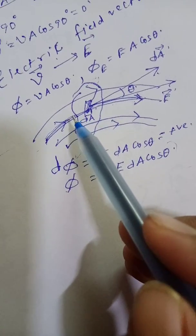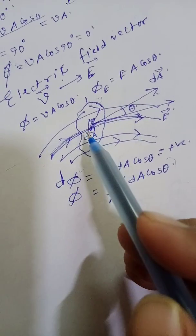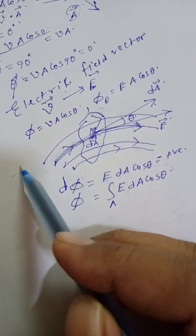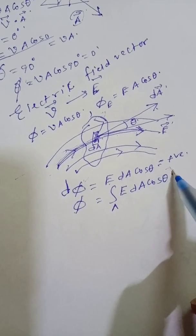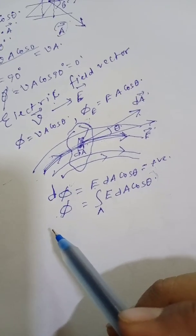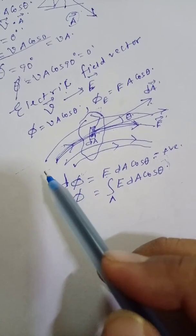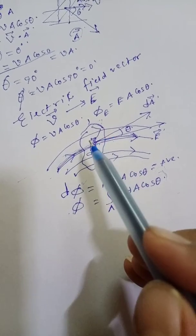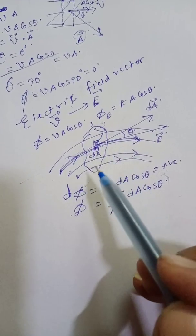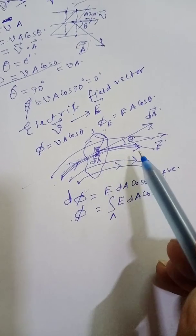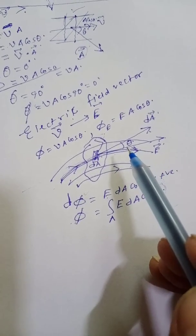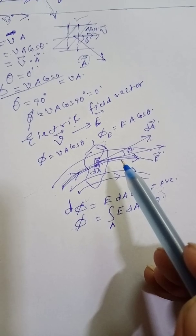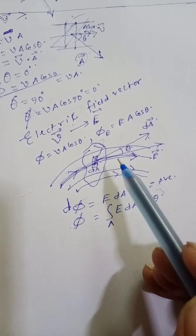If you want to calculate the flux of the line which is entering the surface, the direction of the electric field line remains the same, but the direction of the area vector will be opposite. In that case, the value of theta will be more than 90 degrees and that flux will be negative. One very important concept: if the line enters the surface, the flux through that surface is negative, and if the electric line leaves the surface, then the flux linked with that surface should be considered as positive.